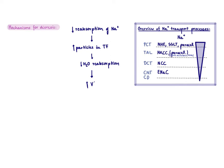Two-thirds of the sodium gets reabsorbed in the proximal convoluted tubule, but this is not facilitated by just one transporter. It is facilitated by several transporters, like the sodium-proton exchanger, SGLT, some sodium amino acid transporters, and some sodium is also taken up paracellularly. Then in the thick ascending limb, about 25% of sodium reabsorption happens via NKCC, and some sodium is also taken up paracellularly.